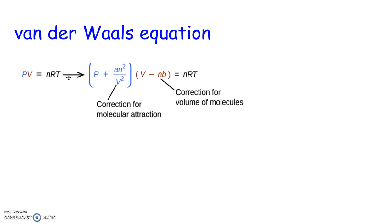So instead of just PV equals nRT, we have P plus A, which is a constant for any given gas, times n squared, the number of moles, divided by V squared. This corrects for the attractive forces between the molecules.